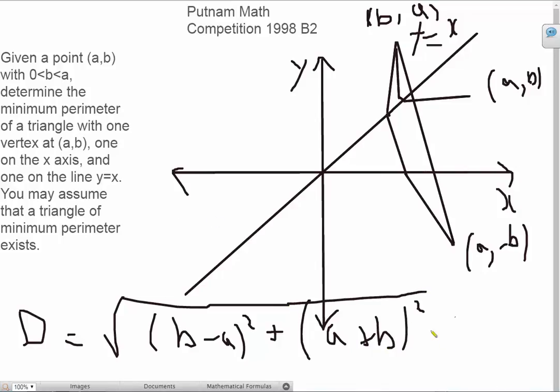And this comes out to be 2√(a²+b²). And the reason we can actually get this shortest distance is because this point (b,a) is on the other side of the line y=x as compared to the point (a,-b).